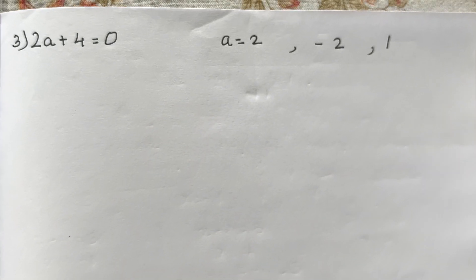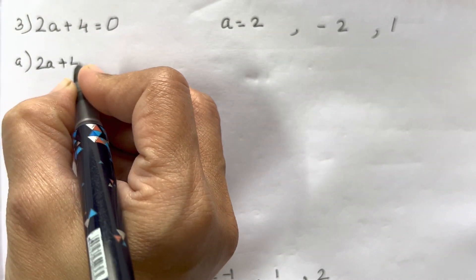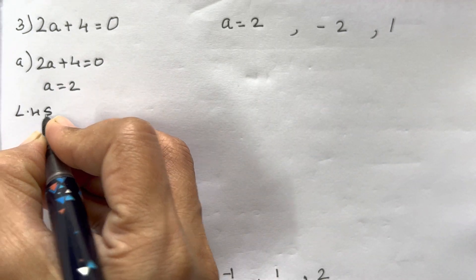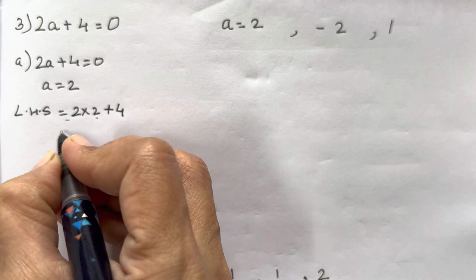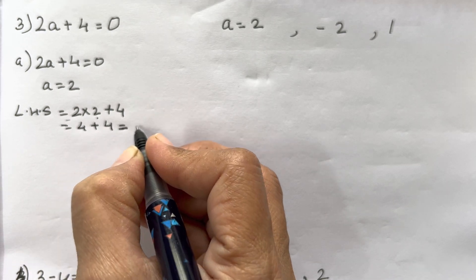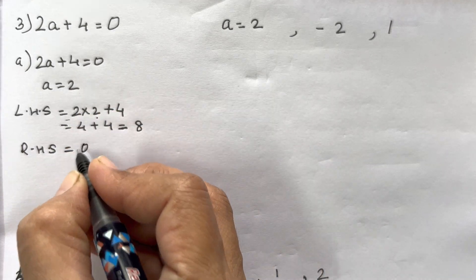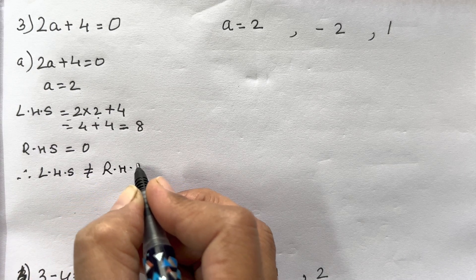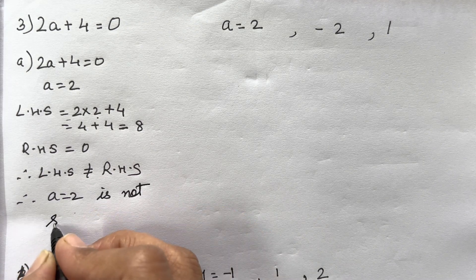Now let's move on to the third sum. The equation is 2a + 4 = 0. Using the same method, with substitution a = 2: Left Hand Side is 2 × 2 + 4 = 4 + 4 = 8. Right Hand Side is 0. Since 8 ≠ 0, Left Hand Side is not equal to Right Hand Side, therefore a = 2 is not a solution.